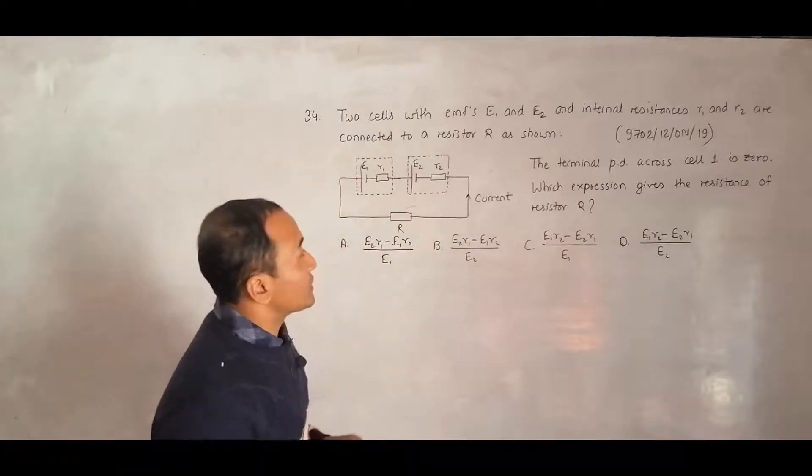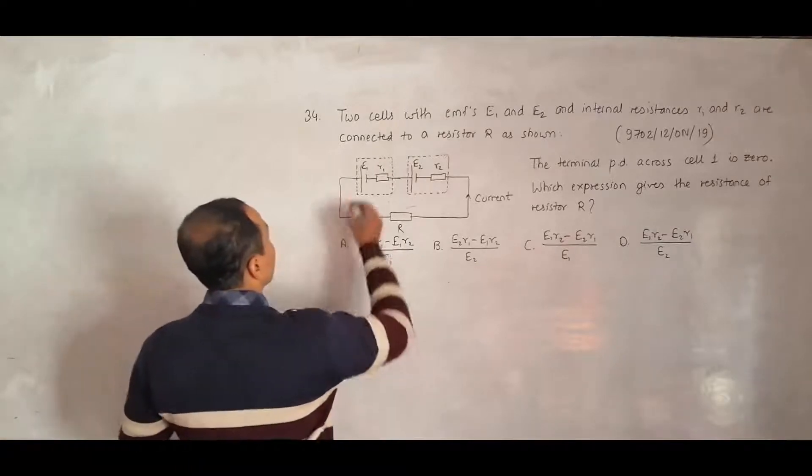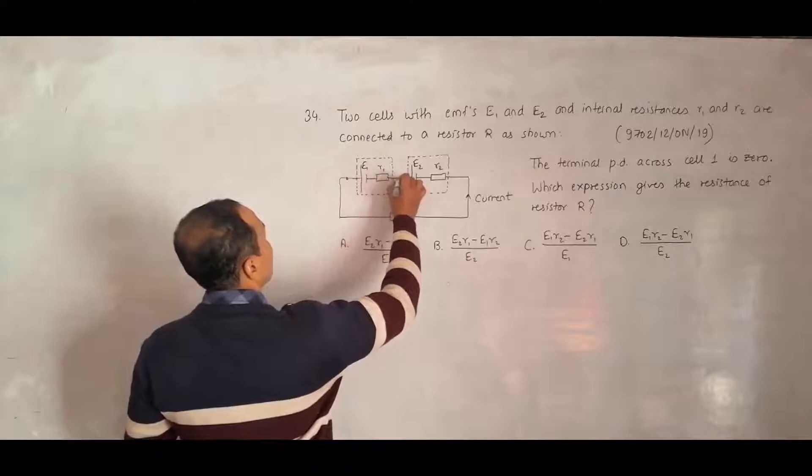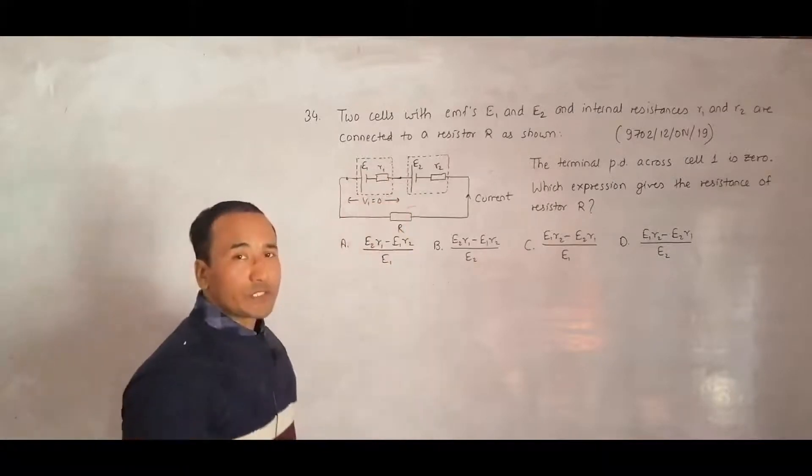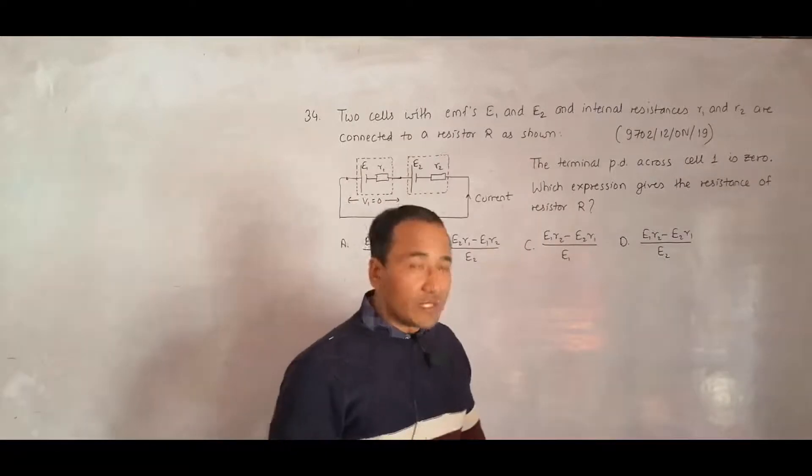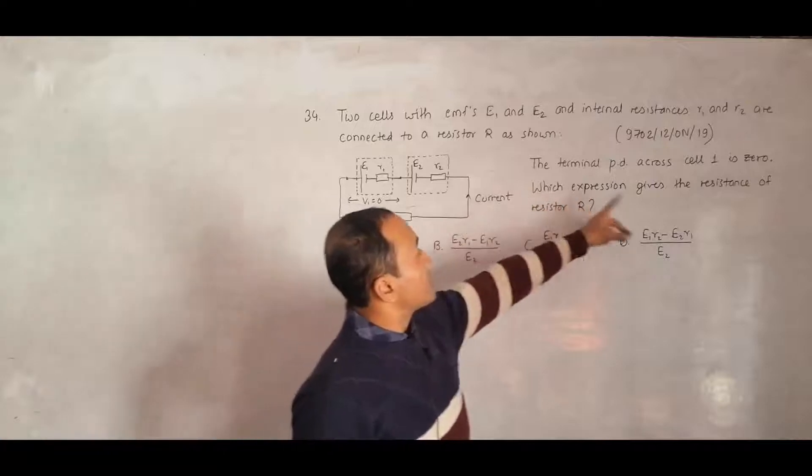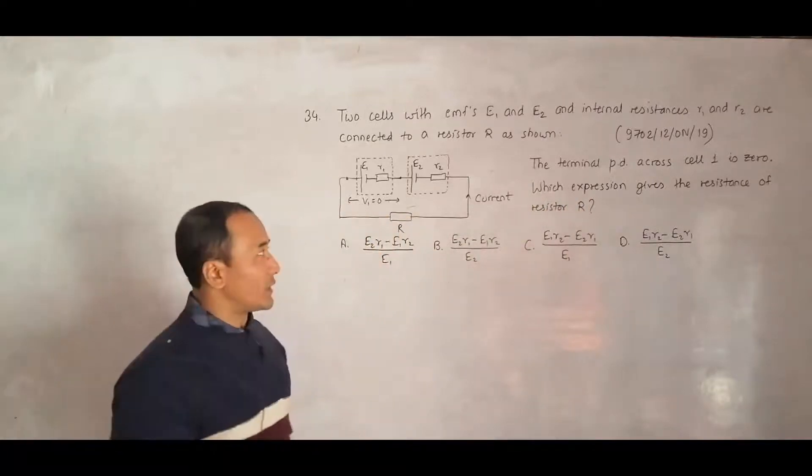The terminal PD across cell 1 is 0. When we do like this, the terminal PD across this thing is 0, so V1 equals 0 during this arrangement. With that condition, we have to find which expression gives the resistance R.